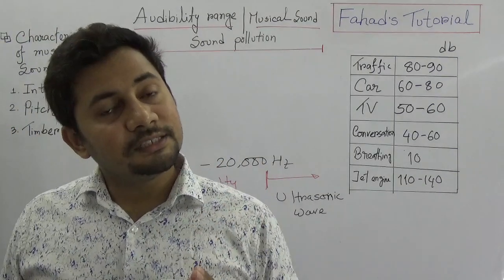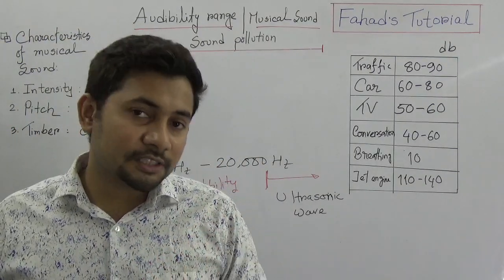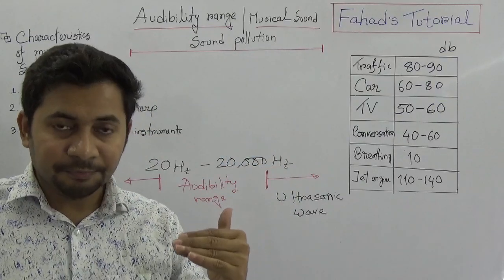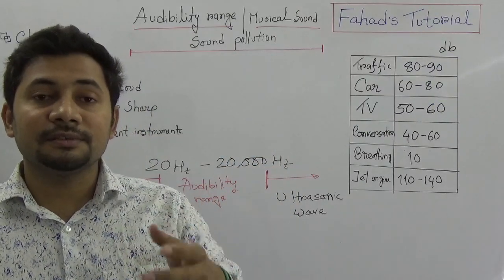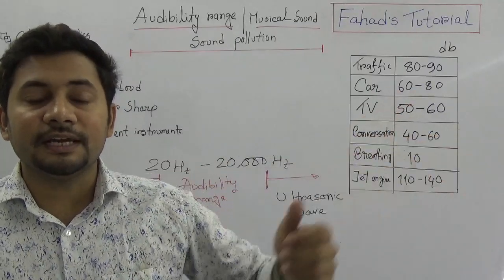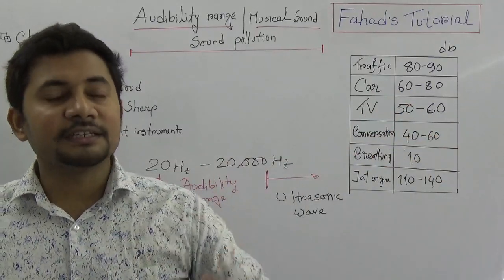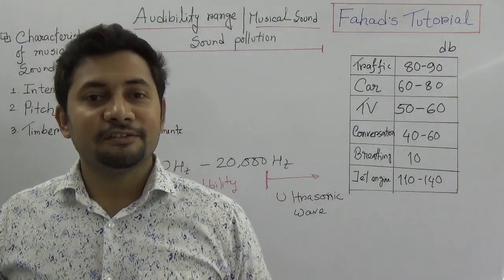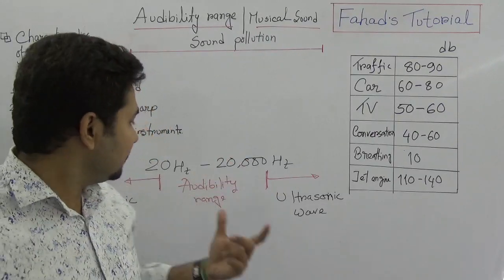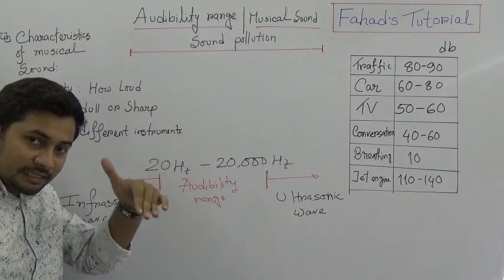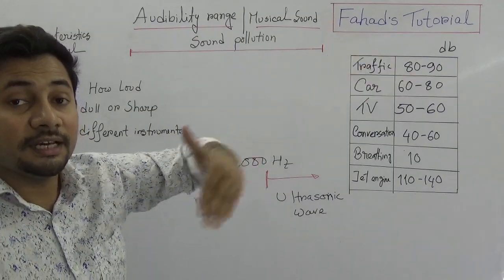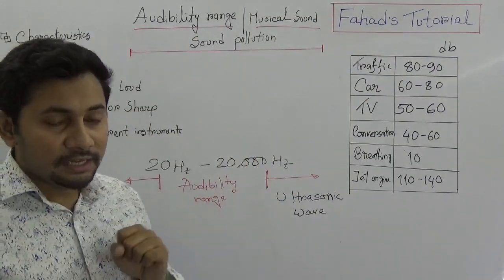You must know: less than 20 hertz is infrasonic — 'infra' means less than. You might know about ultraviolet rays regarding wavelengths of light, which I will discuss in the nature of light class. 'Ultra' means more than. So that is the audibility range.